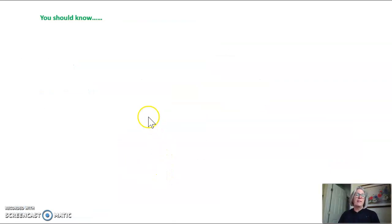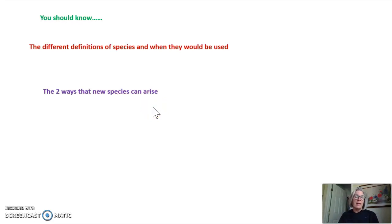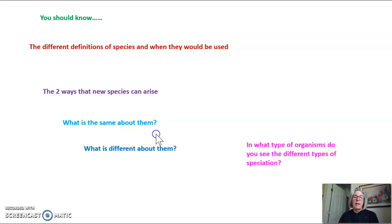So what you should know from tonight's video: You should know the different definitions of species and when they would be used. You should know the two ways that new species can arise. You should know what's the same about these two different ways species can arise and what's different about them. And you should know in what type of organisms do you see these different types of speciation. So that's all for tonight.